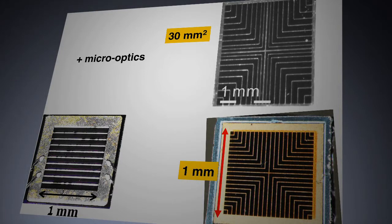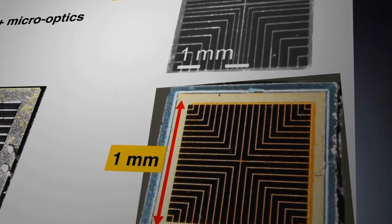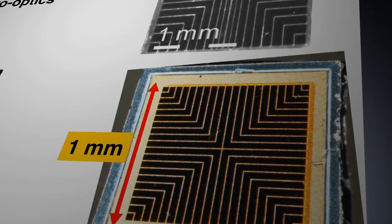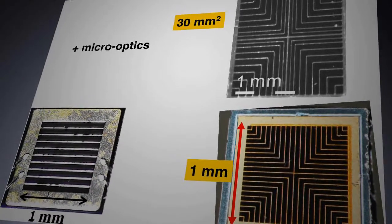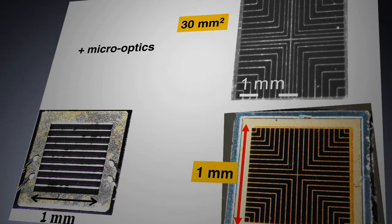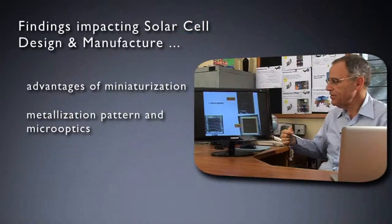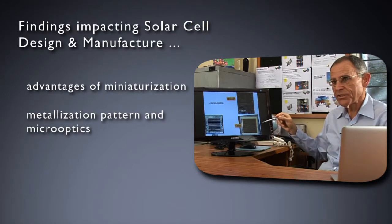You see these metal grids typically made of gold or other metals that can extract the electricity effectively from the bulk material to the exterior. You can already see how manufacturers of 30 square millimeter cells or even one square millimeter cells are investing considerable efforts in determining non-uniform optimized fingers of these metal structures to more effectively extract the electrical current. The results of our research have informed this.